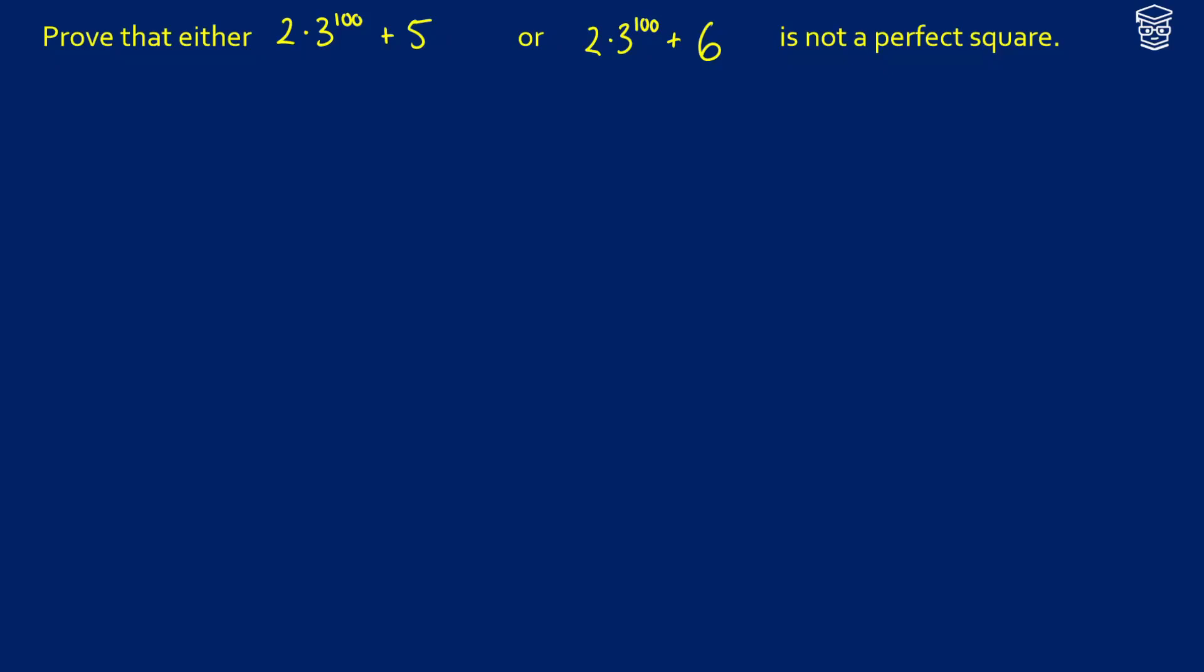Today we want to prove that either 2 times 3 to the 100 plus 5 or 2 times 3 to the 100 plus 6 is not a perfect square.